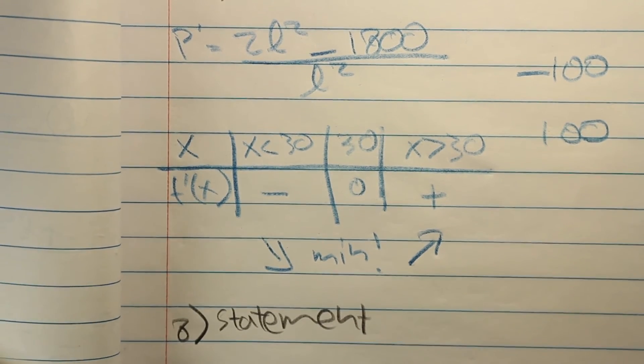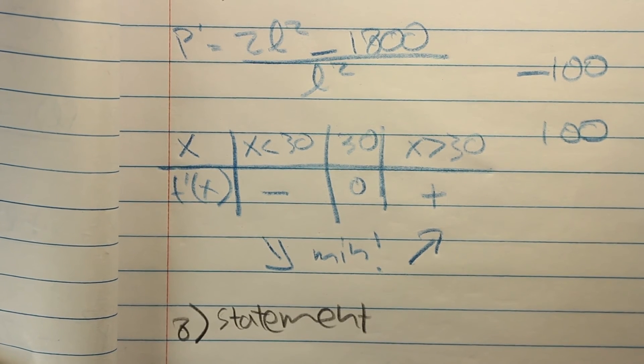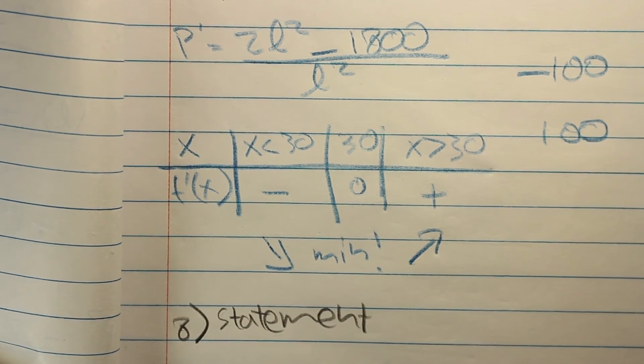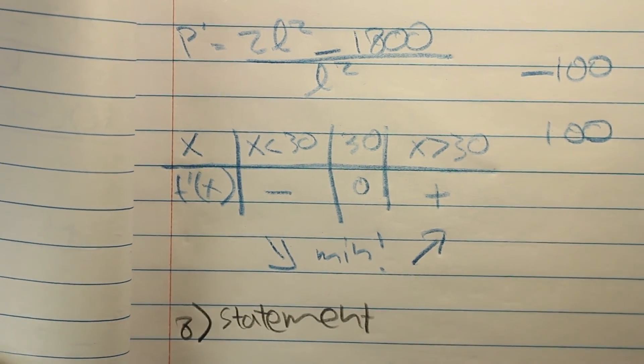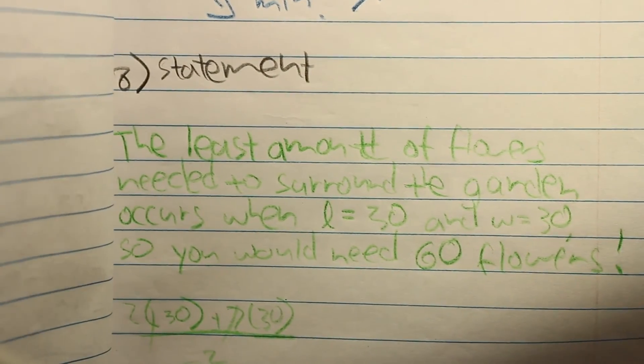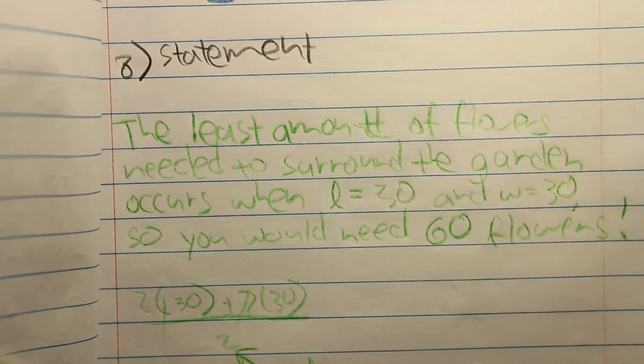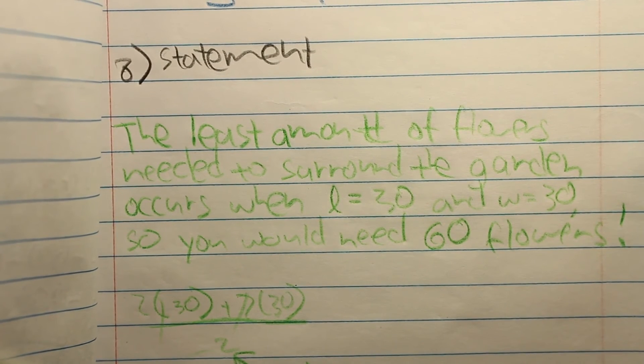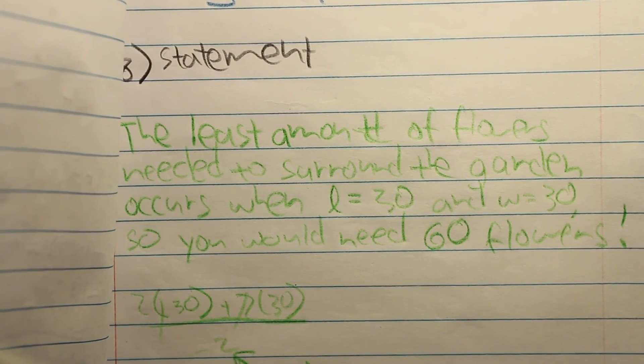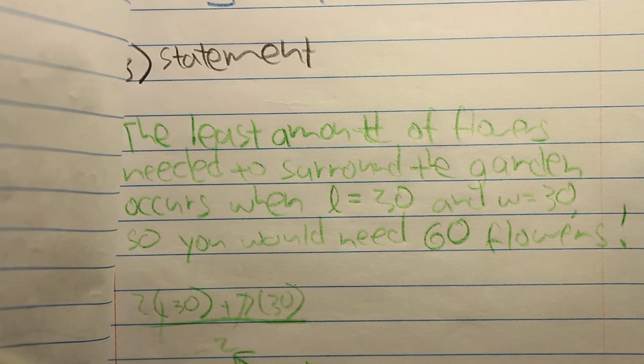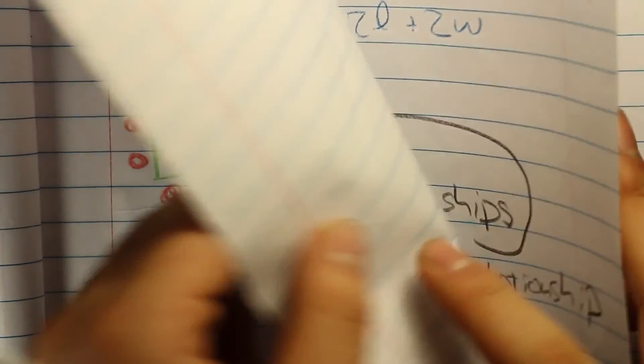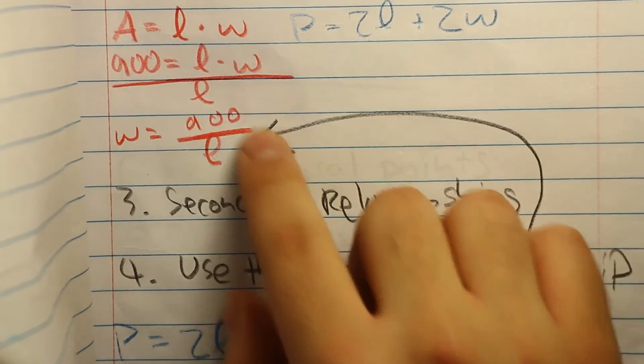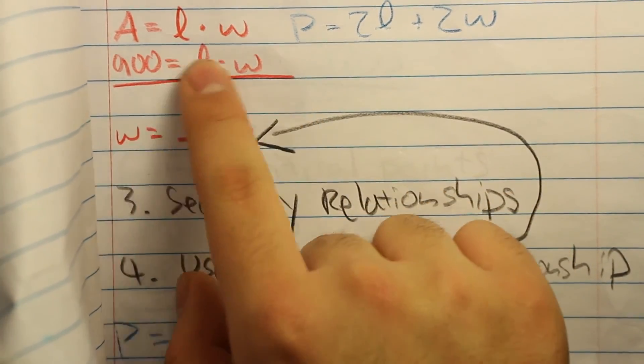So this gives the answer to the problem, which was the least number of flowers you can use to surround the area of the garden. Finally, you want to summarize it all in a statement and just say that the least number of flowers needed to surround the garden occurs when length is 30 and when width is 30. By the way, you can get width by plugging it back into the original area formula right here. And if you plug in 30 for there, you also get 30 for that because that's 900.